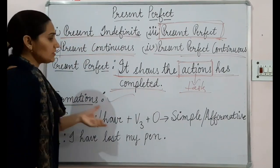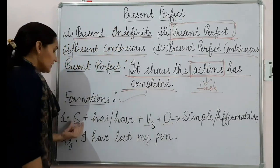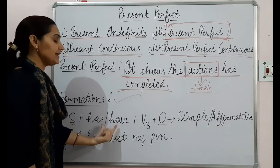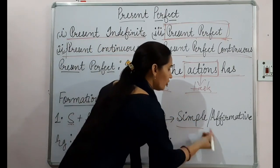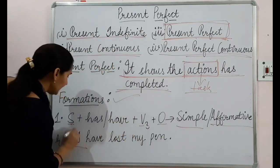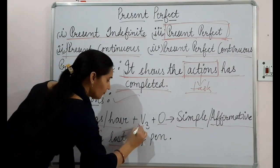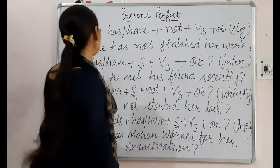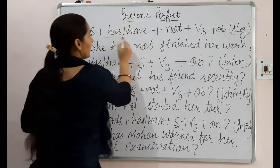Now we will discuss the formation of this tense. S stands for subject, V for verb, and O for object. In present perfect tense, the helping verb will be 'has' or 'have' followed by the third form of the verb and object. The first formation is for a simple or affirmative sentence. For example: 'I have lost my pen.' Here 'I' is the subject, 'have' is the helping verb, 'lost' is the third form of the verb, and 'pen' is the object.